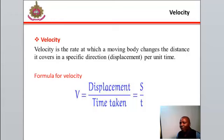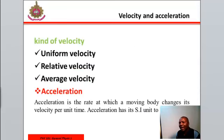The formula for velocity is given as V equal to displacement over time taken. The kinds of velocity: uniform velocity, relative velocity, average velocity.